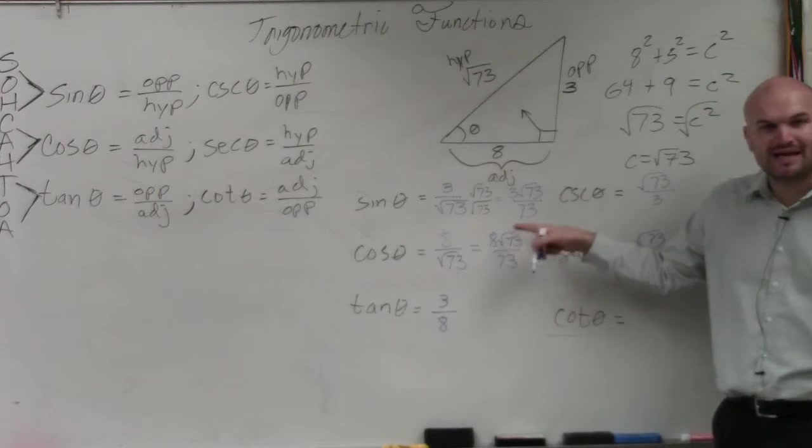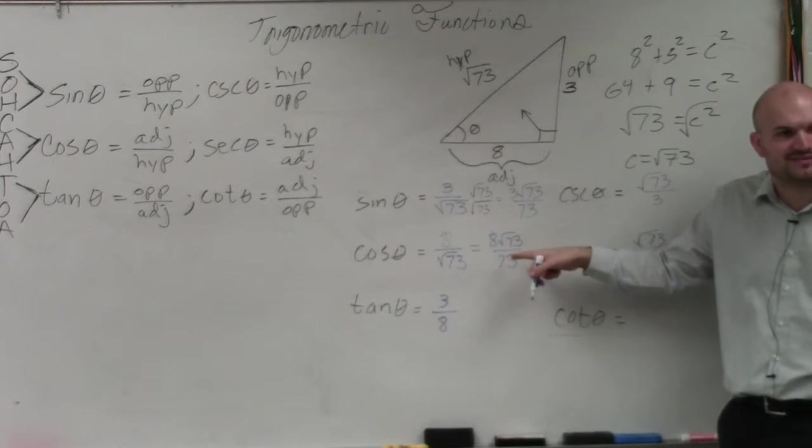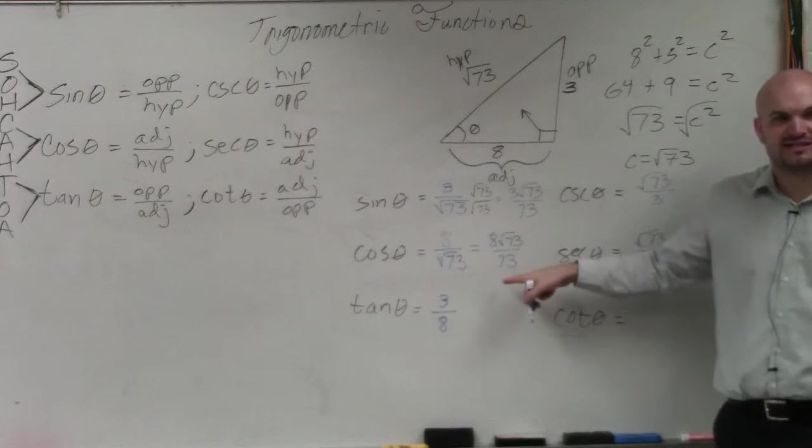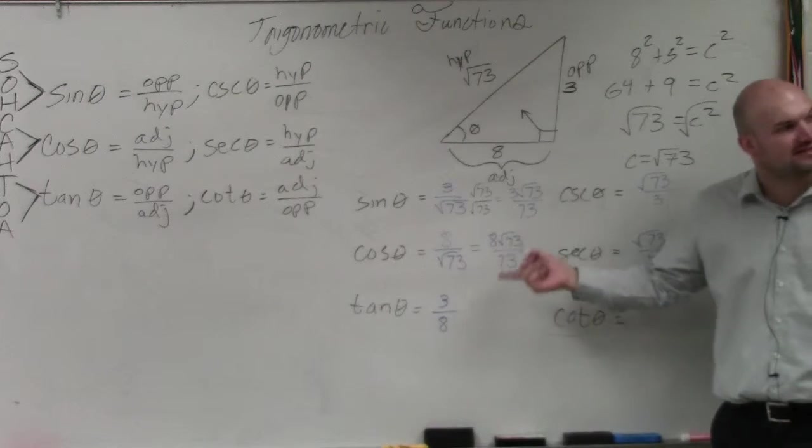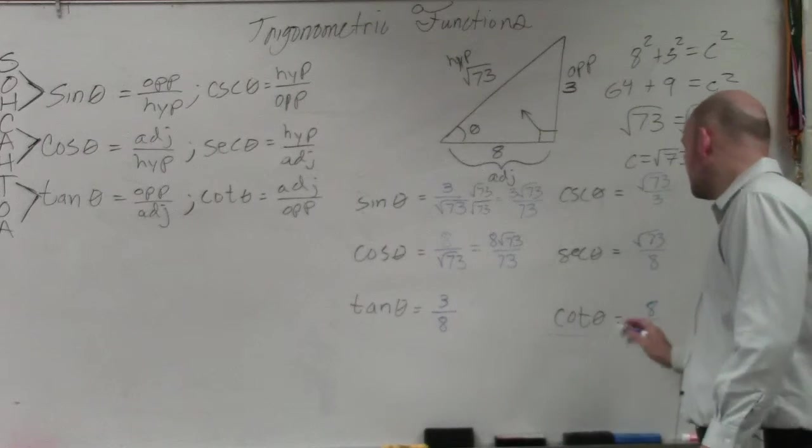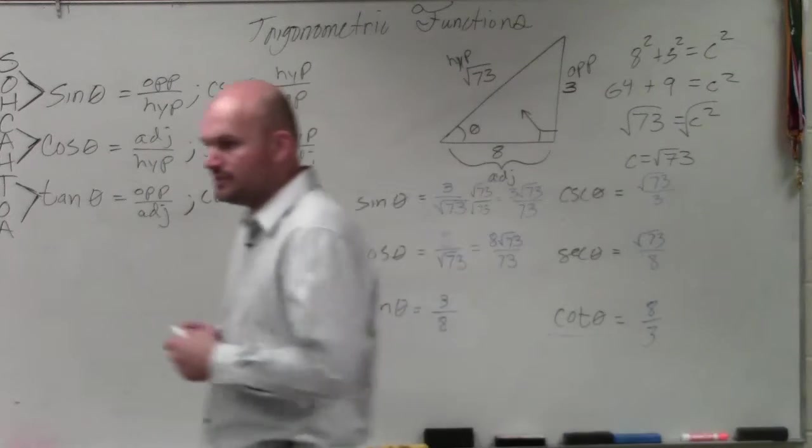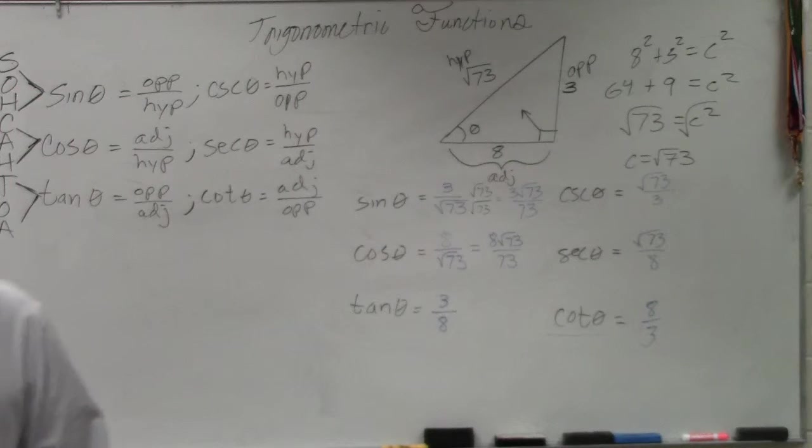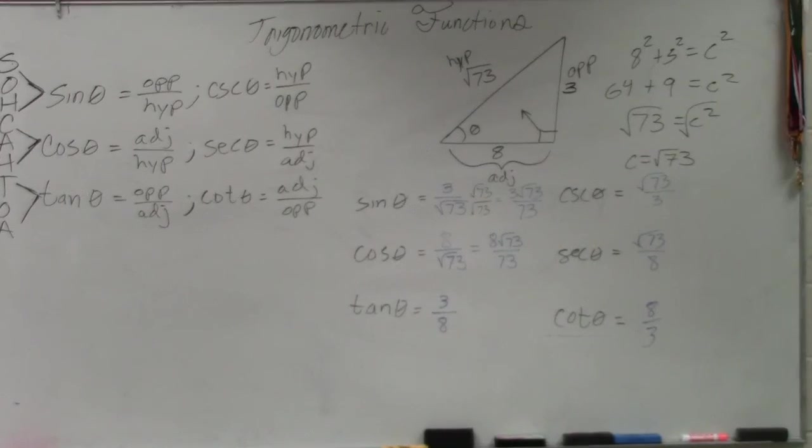You don't want to reciprocate these, because if you reciprocate this, what happens? A radical's in the denominator. Then you have to rationalize the denominator again. So you don't want to reciprocate that. And then this one is 8 over 3. And that's it. I think you guys have like three problems on your homework, or four or five like that. You just practice over and over and over again.